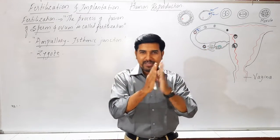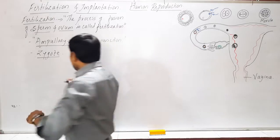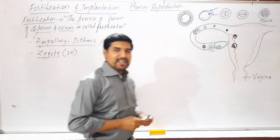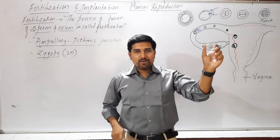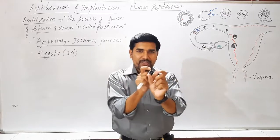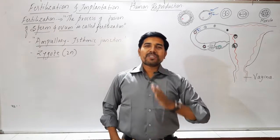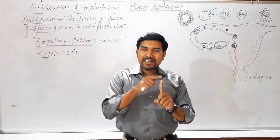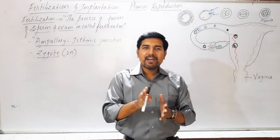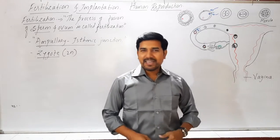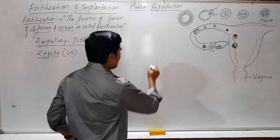After fertilization, when the male and female gametes fuse — both haploid — the result becomes diploid, and this diploid cell is called a zygote. The zygote contains 46 chromosomes: 23 from the mother and 23 from the father. The zygote is a single cell, and the question arises whether it develops into a male or a female baby. The detailed account of this is covered in the genetics chapter.